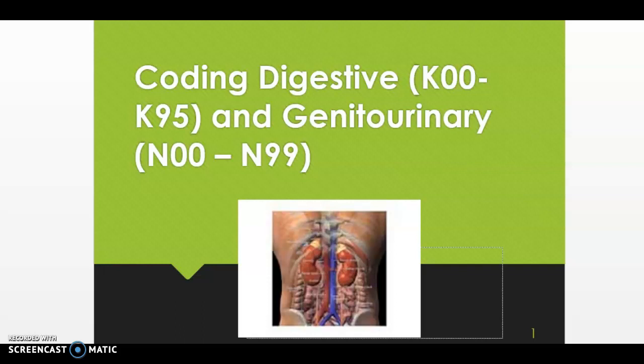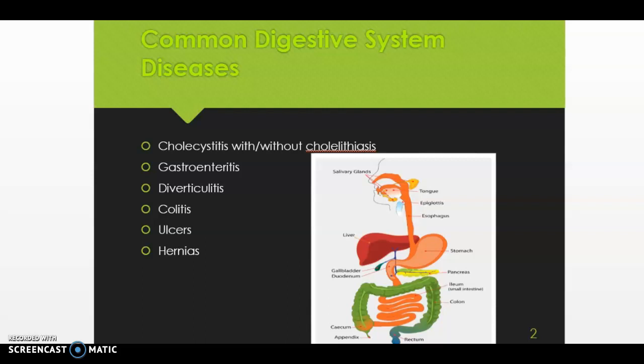Hello everyone, in this video we are going to review how to assign ICD-10 CM codes for digestive and genital urinary conditions. First, let's look at some common digestive diseases or conditions. We have cholecystitis, which is an inflammation of the gallbladder, and that can be with or without cholelithiasis, which is gallstones.